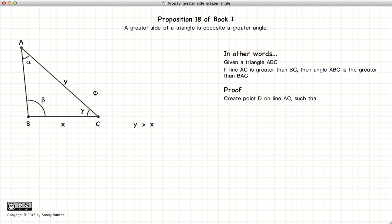The first thing we're going to do is define a point D such that CD is equal to CB. And now we will draw a line from BD.